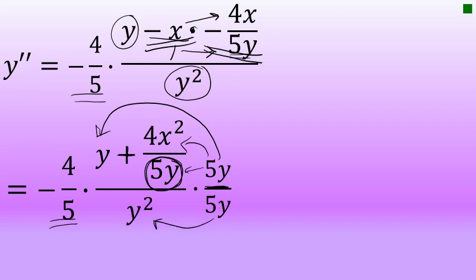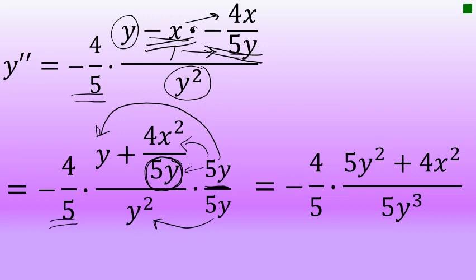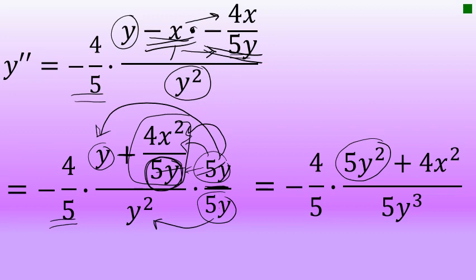This is still a complex fraction because there's a fraction in the numerator. I'll eliminate the 5y in the denominator of 4x squared over 5y by multiplying by 5y over 5y — a special form of 1. When I multiply 5y times 4x squared over 5y, those 5y's cancel out. I must multiply 5y times both terms in the numerator and 5y times the y squared in the denominator. The result: 5y times y is 5y squared, the 5y's cancel in the second term leaving 4x squared, and 5y times y squared gives 5y to the third.